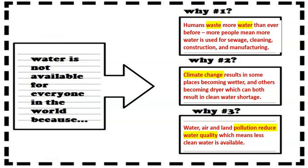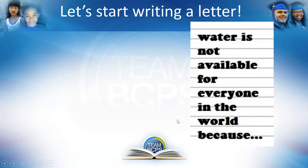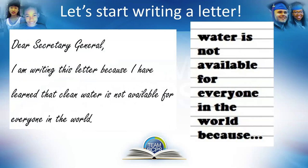Let's remind ourselves of what we learned in the last lesson. In lesson number six, we learned that water is not available for everyone in the world, and we learned there were three reasons. One of them is water waste — people waste more water than ever before. Another reason was climate change. And the last reason was pollution reducing water quality. We're going to use this information from lesson number six to start writing our letter.